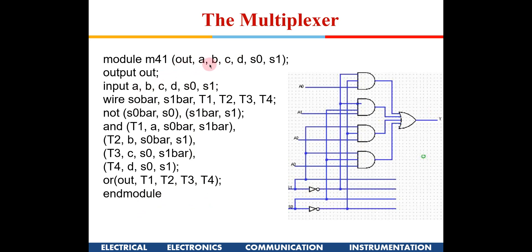In gate-level modeling, you have an output and four inputs A, B, C, D, with S0 and S1 as the control signals. You need to declare wires to generate S0 bar and S1 bar, plus temporary internal wires. Looking at the circuit figure, you can write the gate-level modeling program.